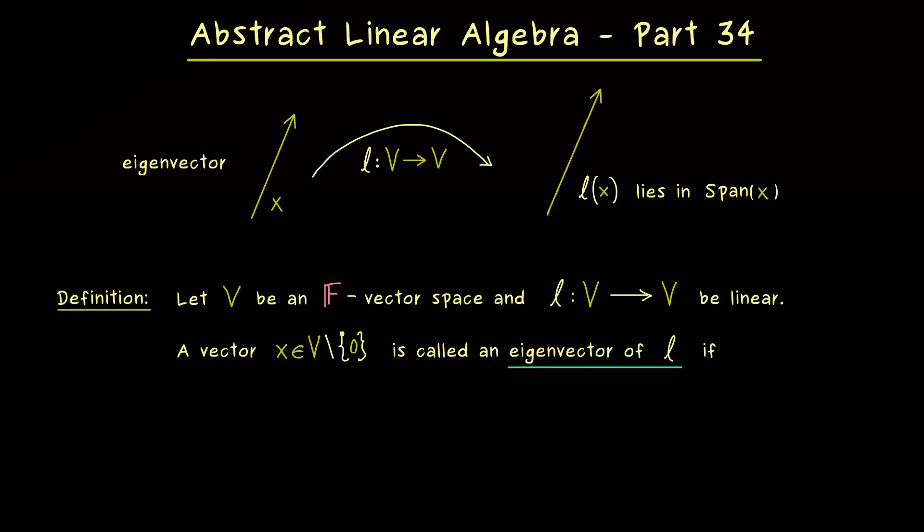However, for any other vector in V it's quite surprising that the linear map is just given by scaling. Hence it means that we can find a scalar lambda in our field F. And this one should satisfy that the image l(x) is given as lambda times x.